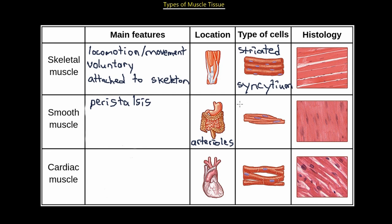Smooth muscles differ in the way they look — they're non-striated, unlike skeletal muscle. These muscles act involuntarily, meaning we do not have to think about our digestive system contracting smooth muscles. That happens automatically based on our reflexes. If there's food traveling down the digestive tract, the nervous system knows to innervate those smooth muscles to push the food down.